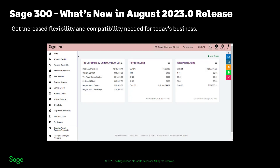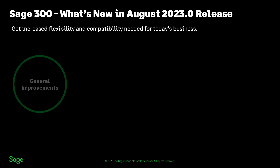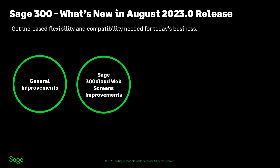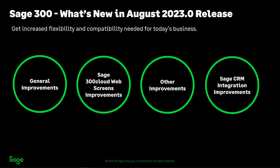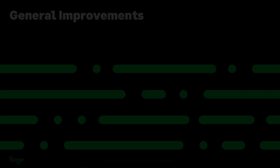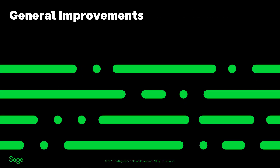Sage 300 2023 offers exciting new features that guarantee better user experience, advanced capabilities, and flexibility needed for today's business. This latest version presents additional functionalities and superior user experience through general improvements, Sage 300 Cloud web screen improvements, other improvements, and Sage CRM integration improvements. Let's start by looking at general improvements available in the Sage 300 Cloud web screens and in the Sage 300 Classic screens.